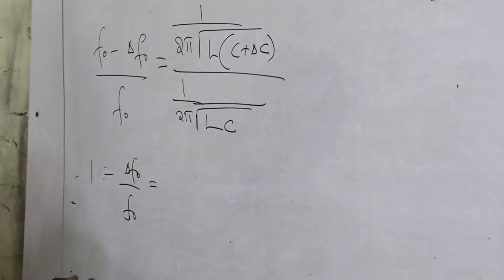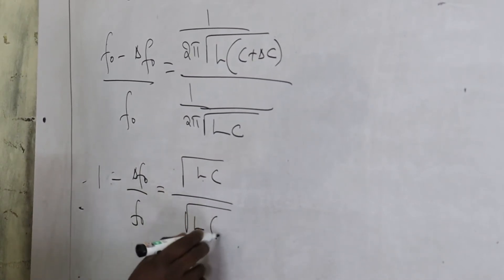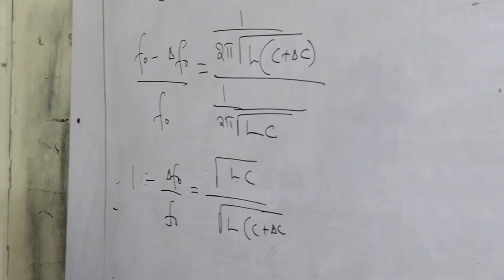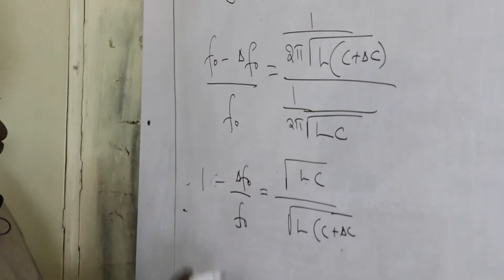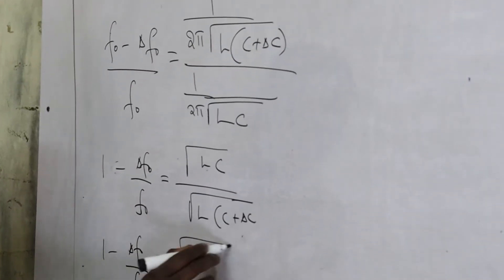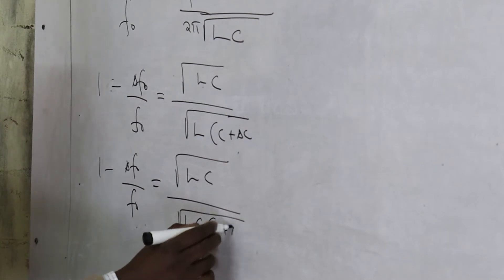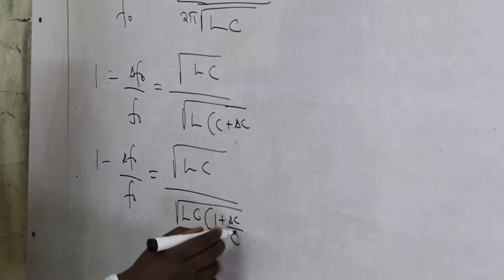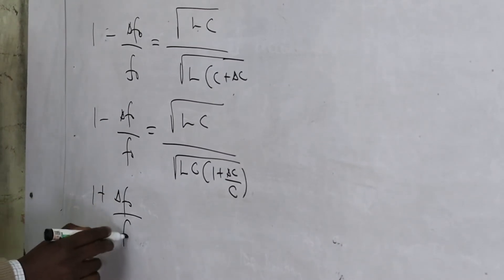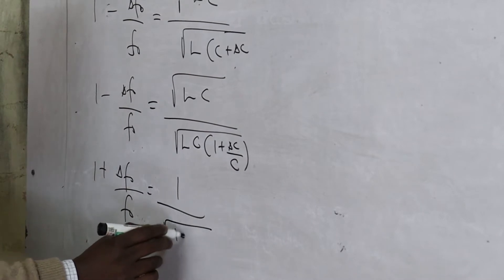The result is 1 plus δF₀, and 1 minus δF₀ over F₀ equals 1 plus δF₀ over F₀, times 1 over the square root of 1 plus δC.